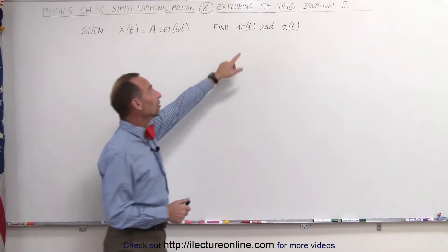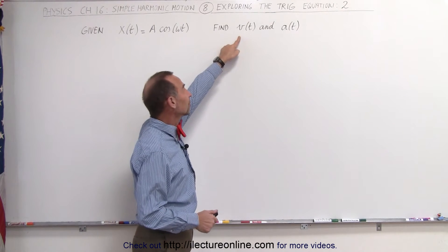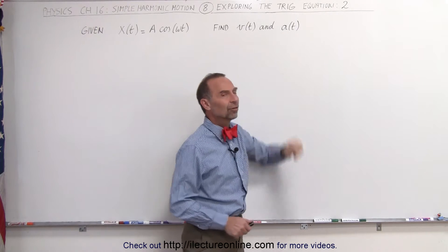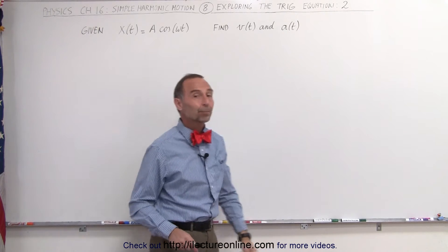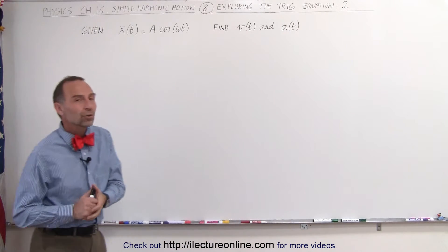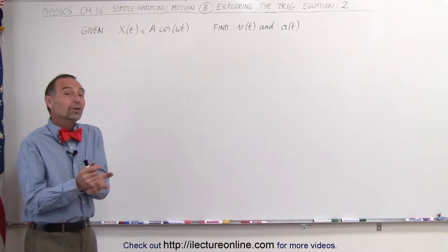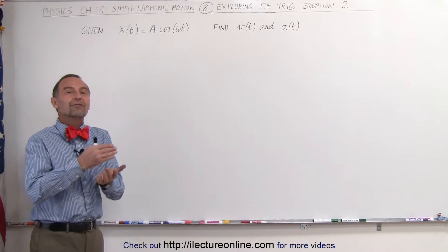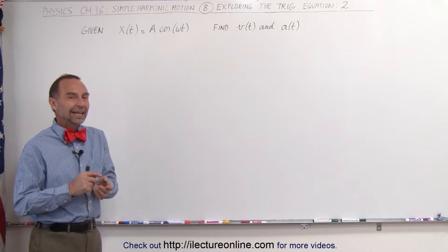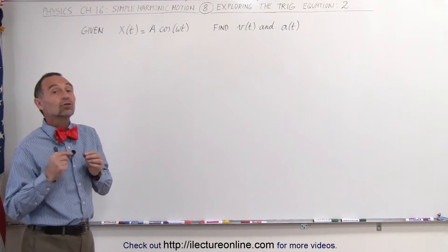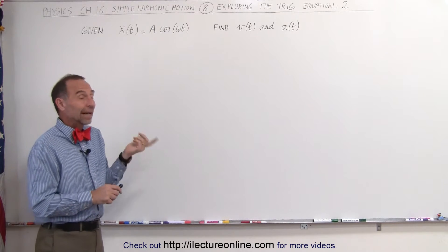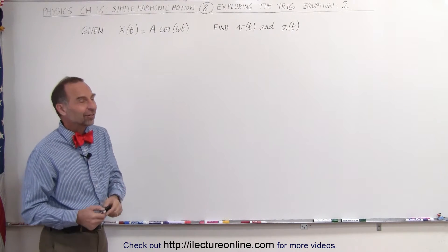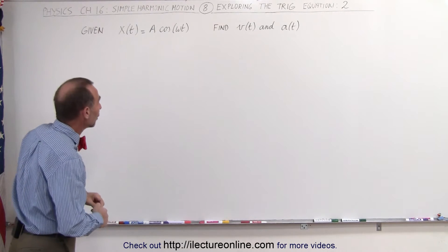We need to find an equation that defines the velocity as a function of time and the acceleration as a function of time. There are a couple of ways to do that. One of the ways is using differentiation. In the next video, we'll show you how to do it algebraically, but differentiation in this case is actually the easiest way to go.